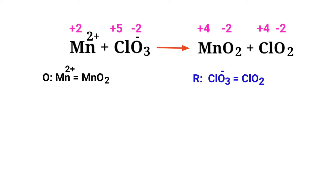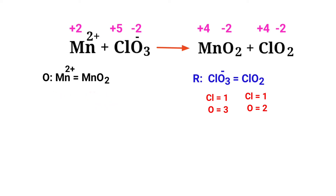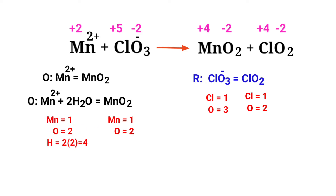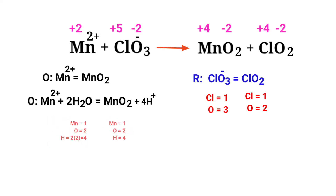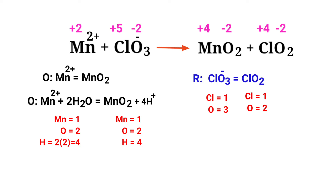Now balance the number of atoms in the two half reactions. In the oxidation half reaction, to balance the oxygen atoms, you can produce water molecules. Once the oxygen atoms are balanced, balance the hydrogen atoms by producing H plus ions. Now the number of atoms are balanced in the oxidation half reaction.